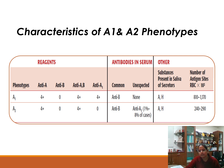When testing with anti-A1 lectin, A1 phenotype gives a four-plus reaction but A2 does not. The common antibody in the serum for both is anti-B. No unexpected antibodies are present in A1, whereas in A2, about 1–8% of cases show anti-A1 antibody activity. Both A1 and A2 secretors have A and H antigens in saliva. Antigen sites: 800,000–1,100,000 per RBC for A1, and 240,000–290,000 for A2.